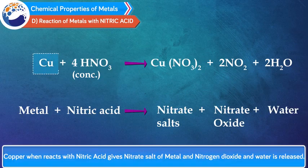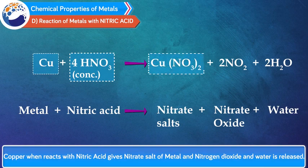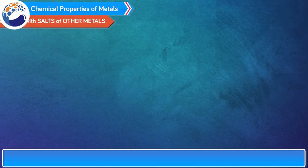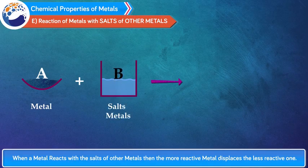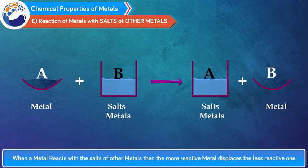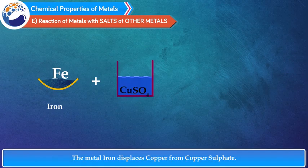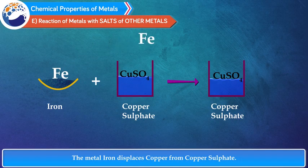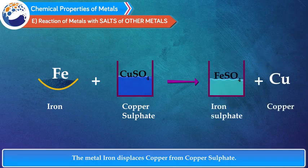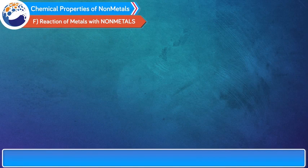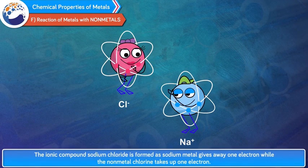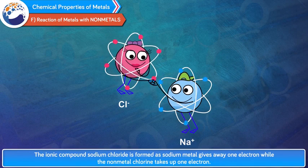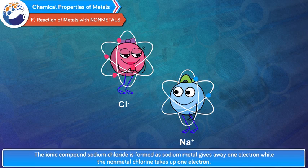For example, copper when reacts with nitric acid gives the nitrate salt of copper, and nitrogen dioxide and water are released. E. Reaction of metals with salts of other metals: when a metal reacts with salts of other metals, the more reactive metal displaces the less reactive one. For example, the metal iron displaces copper from copper sulphate, which means that iron is more reactive than copper. F. Reaction of metals with non-metals: when metals react with non-metals, ionic compounds are formed. For example, the ionic compound sodium chloride is formed as sodium metal gives away one electron while the non-metal chlorine takes up one electron.